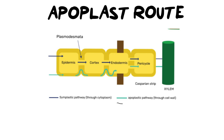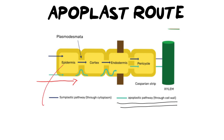In this diagram we're going to focus on the apoplastic pathway, which is through the cell wall. We will be doing the symplastic pathway in the next video. Water is going to enter from the soil and go into the epidermis — specifically the epidermal tissue we're talking about here is those root hair cells. You need to know how they are structured in order to facilitate this, because they have special adaptations.